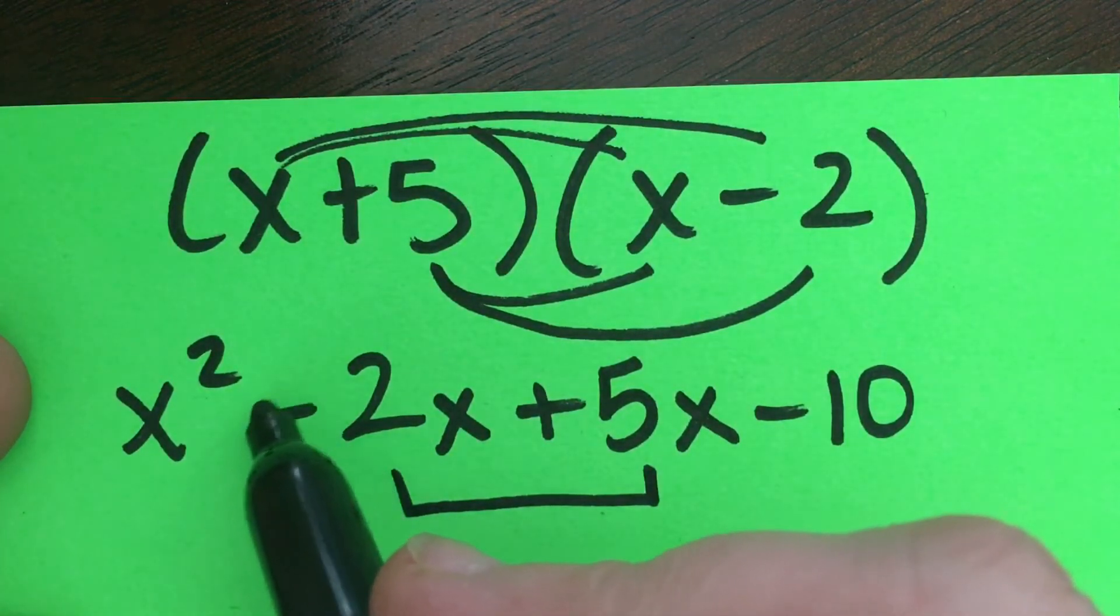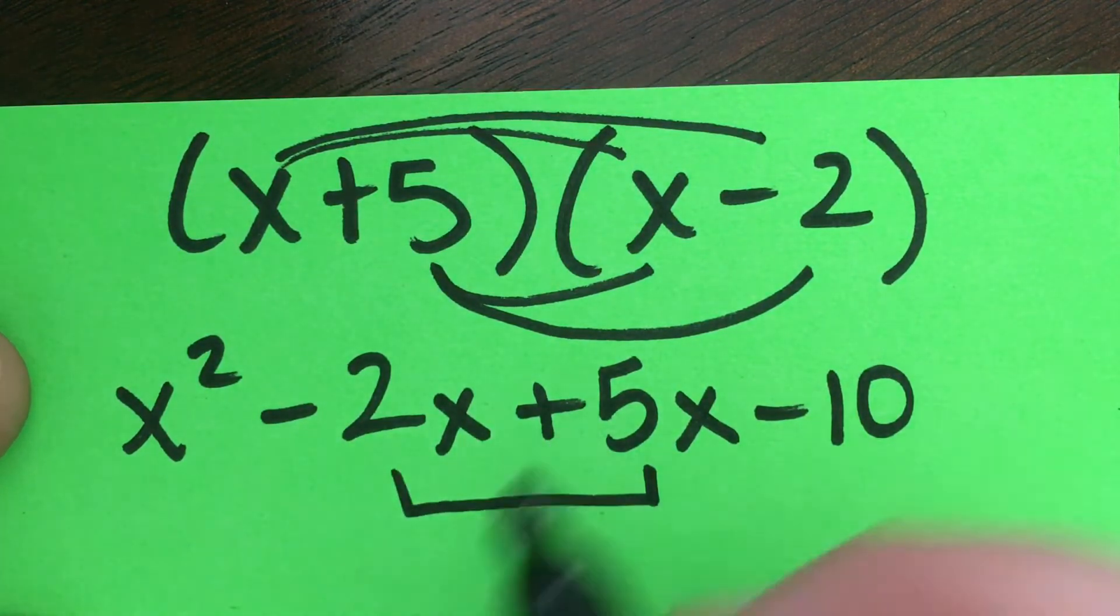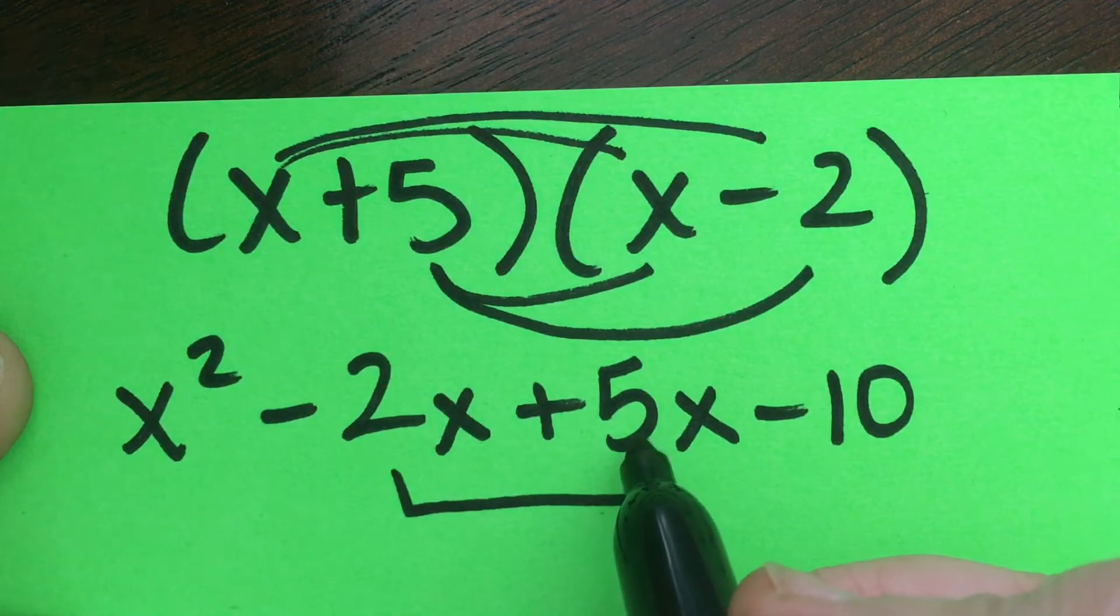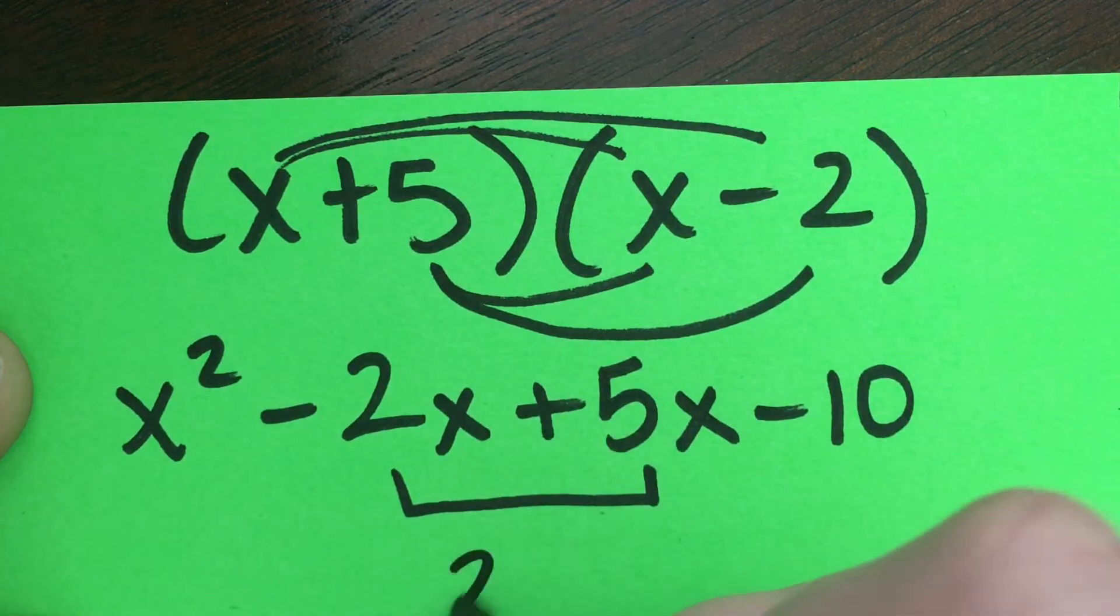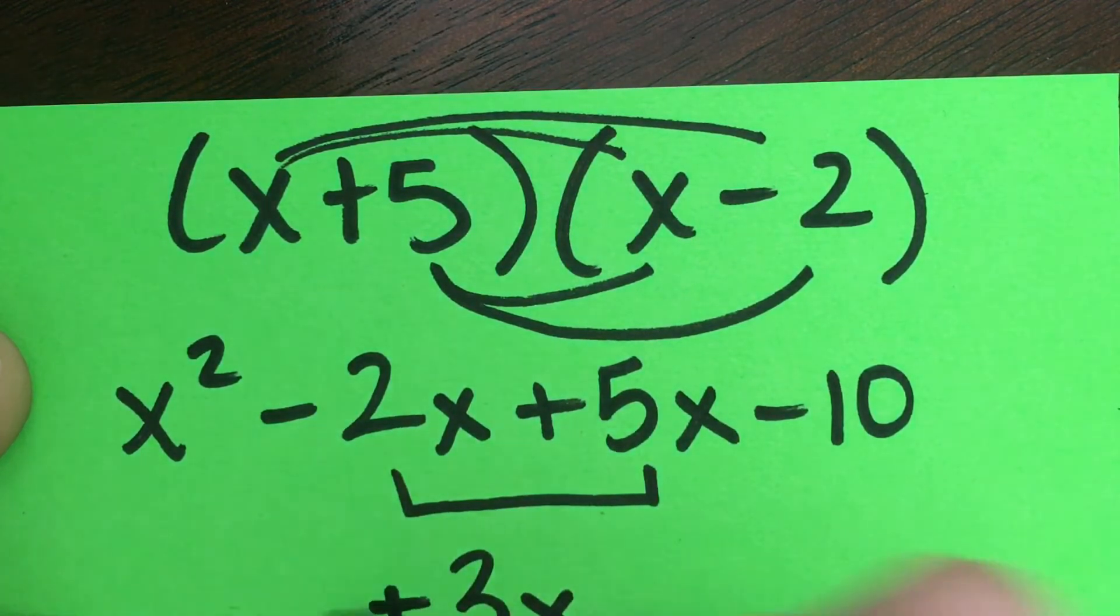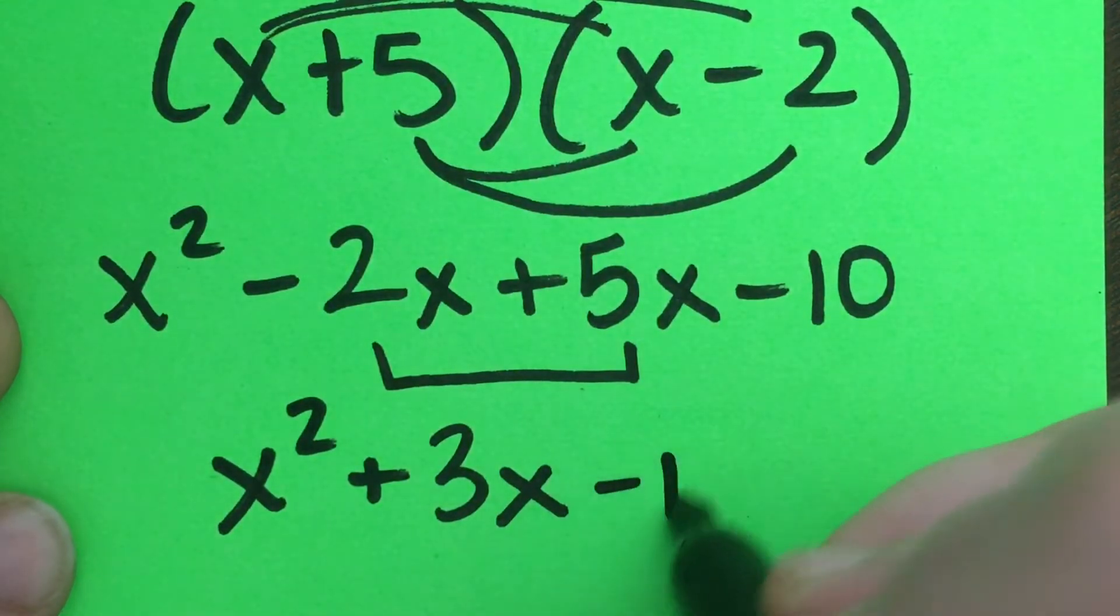But because the signs are different when we combine them, it actually is a subtraction step that we are doing. And so negative 2 plus a positive 5, or plus the 5, should get us a 3x. So it really felt like 5 subtract 2, and that left us with a positive 3x. We're left with x squared plus 3x minus 10.